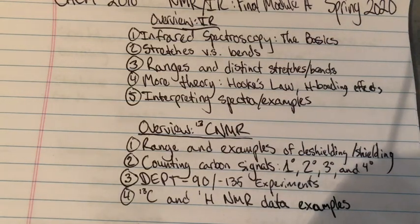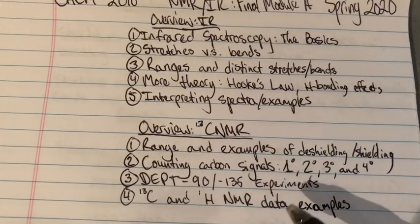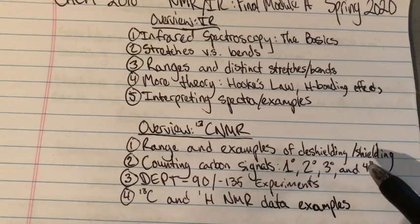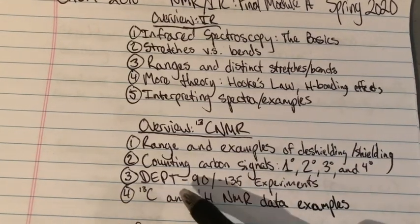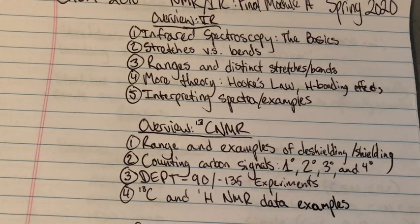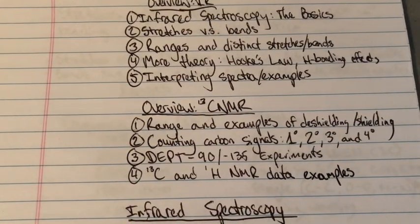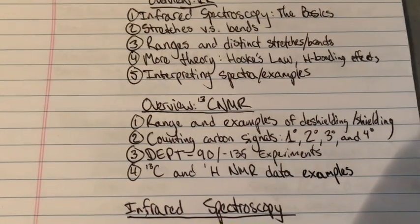For CNMR, we're going to look at ranges from 250 to 14 ppm, examples of deshielding and shielding, and counting the carbon signals — whether they be primary, secondary, tertiary, and quaternary. This is all going to be aided by DEPT 90 and 135 experiments, which really help out. And then finally, C13 and hydrogen NMR data examples that we're going to compare side by side and see if we can predict different types of spectra based on what the compound is.